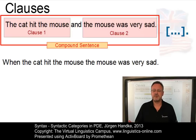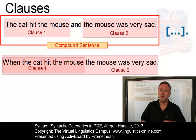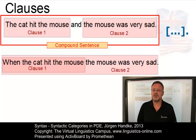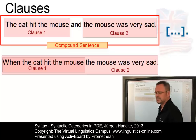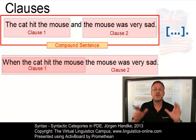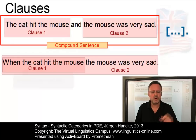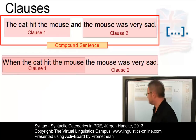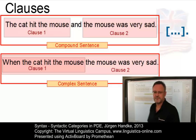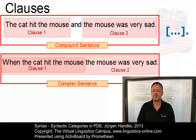In the second example — When the cat hit the mouse, the mouse was very sad — we also have two clauses. However, only clause two can stand on its own: The mouse was very sad. Clause one is dependent on or subordinate to it. Such a sentence is referred to as a complex sentence. In compound sentences we have several main clauses, whereas in complex sentences we have one main clause and one or more subordinate clauses.